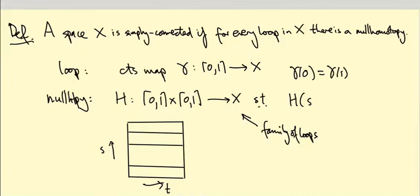Sorry, H of (s, 0) equals H of (s, 1) equals whatever this point is. Let's give this point a name. Let's call this little x. This is the base point where all our loops are based.